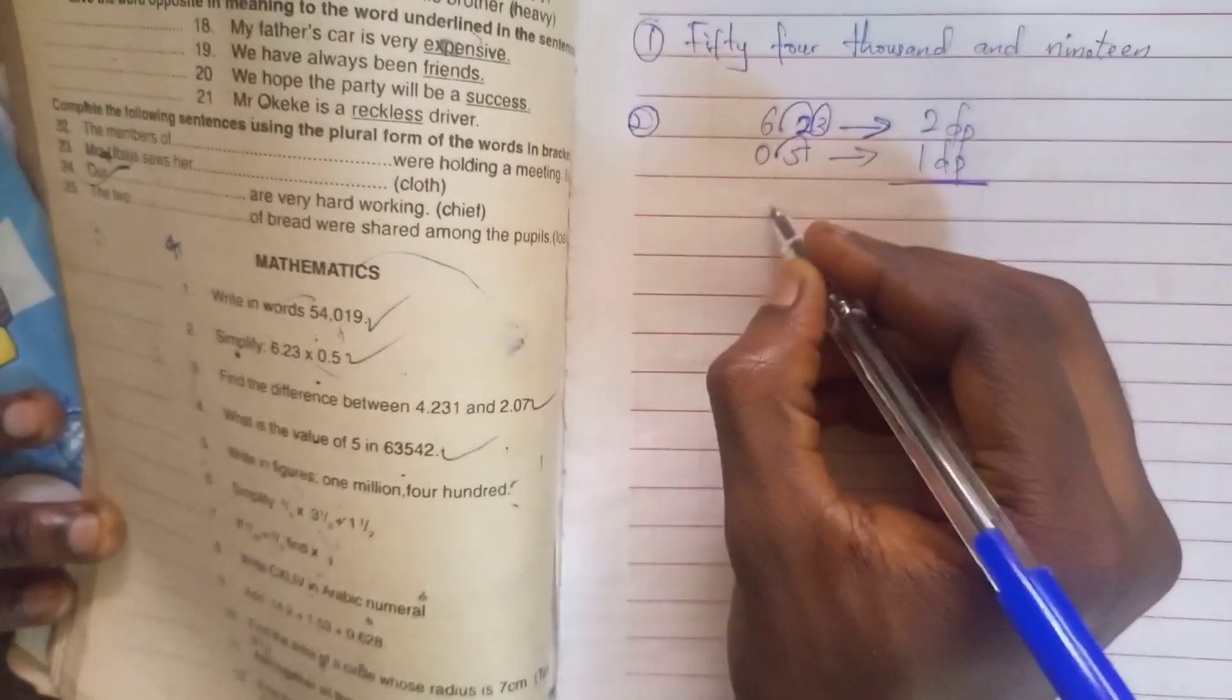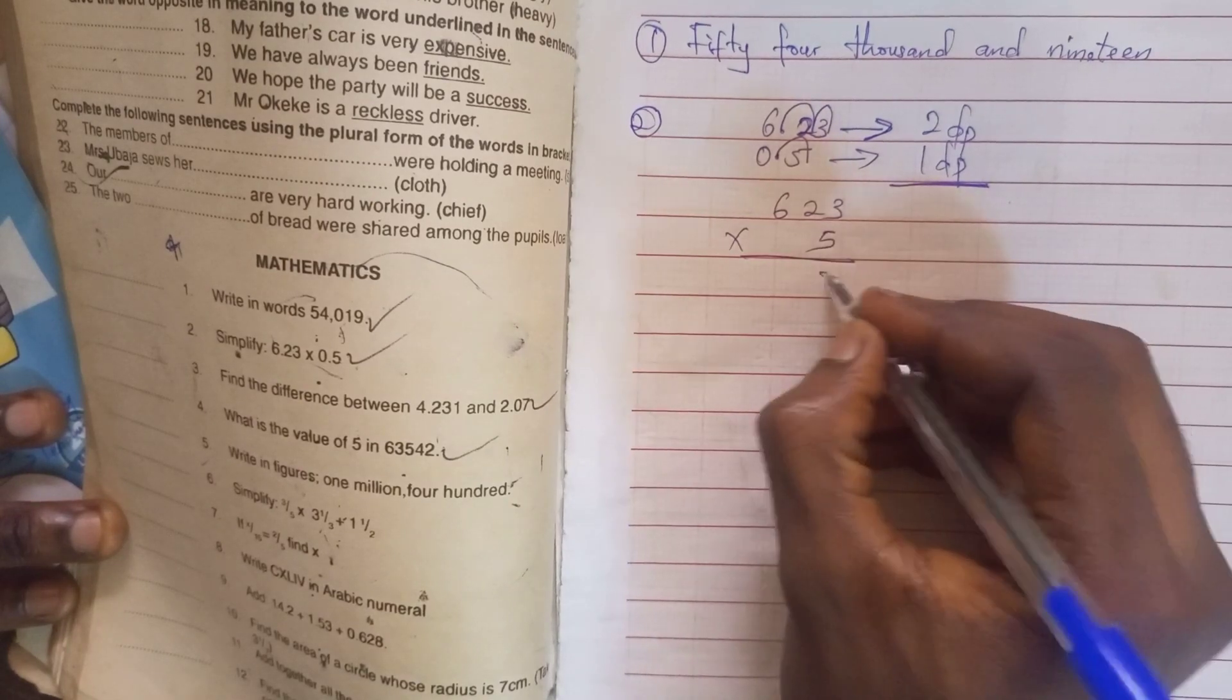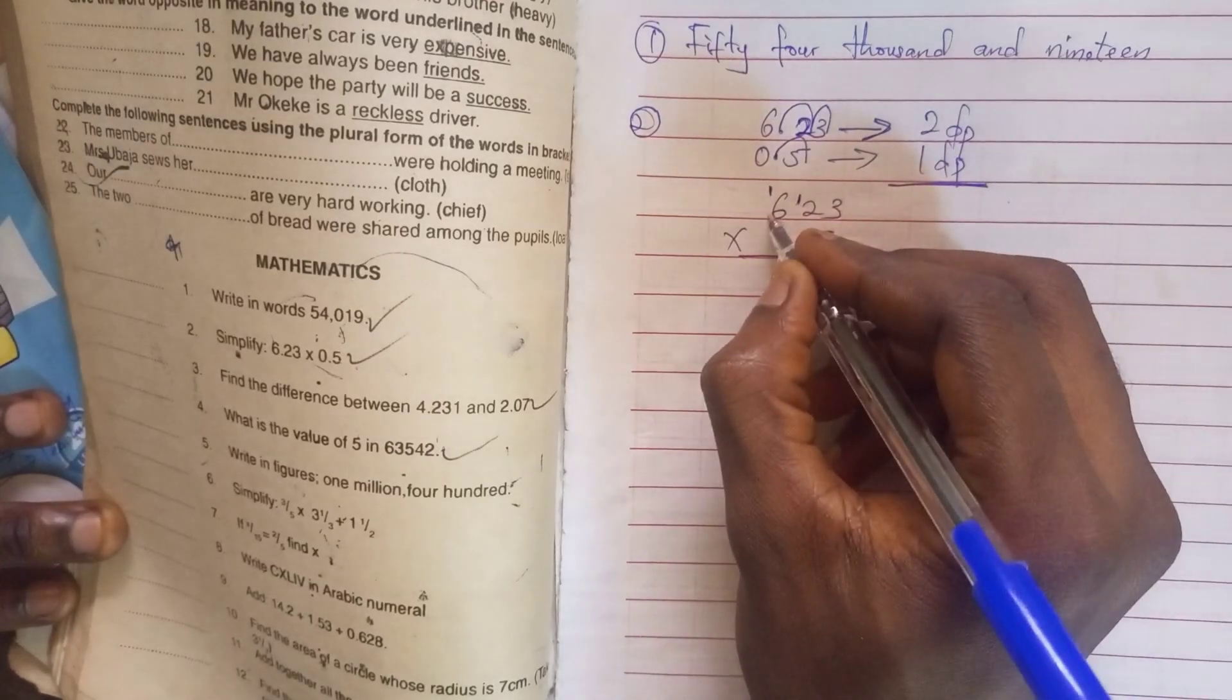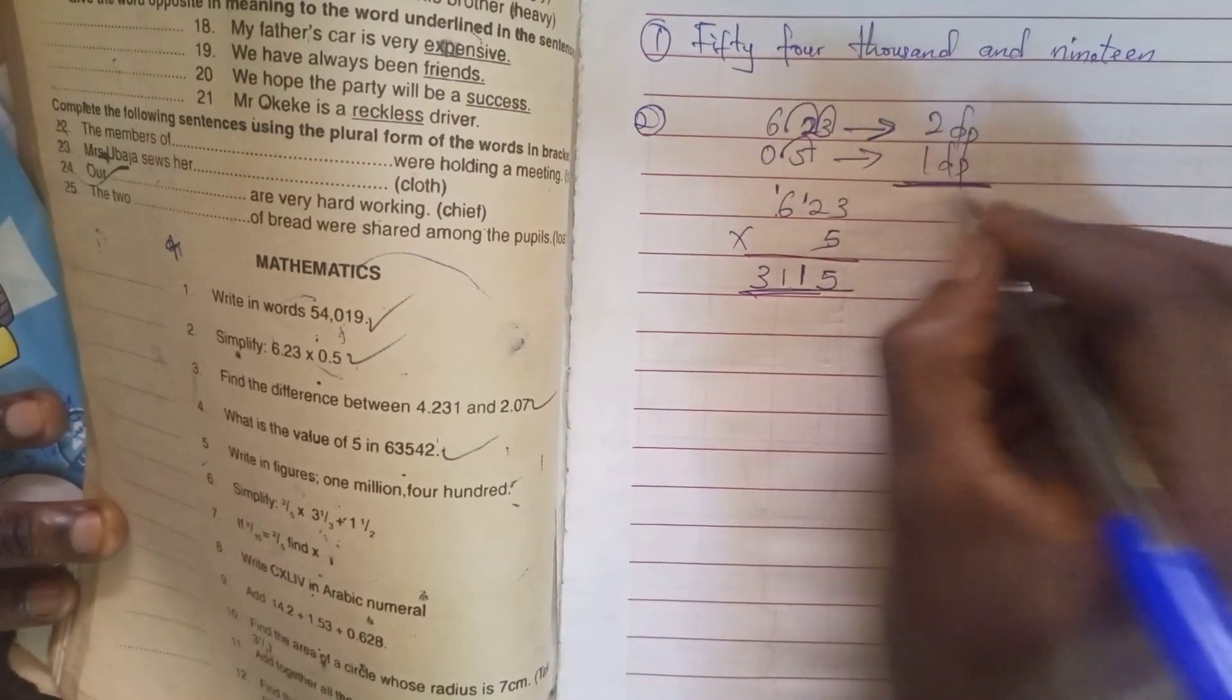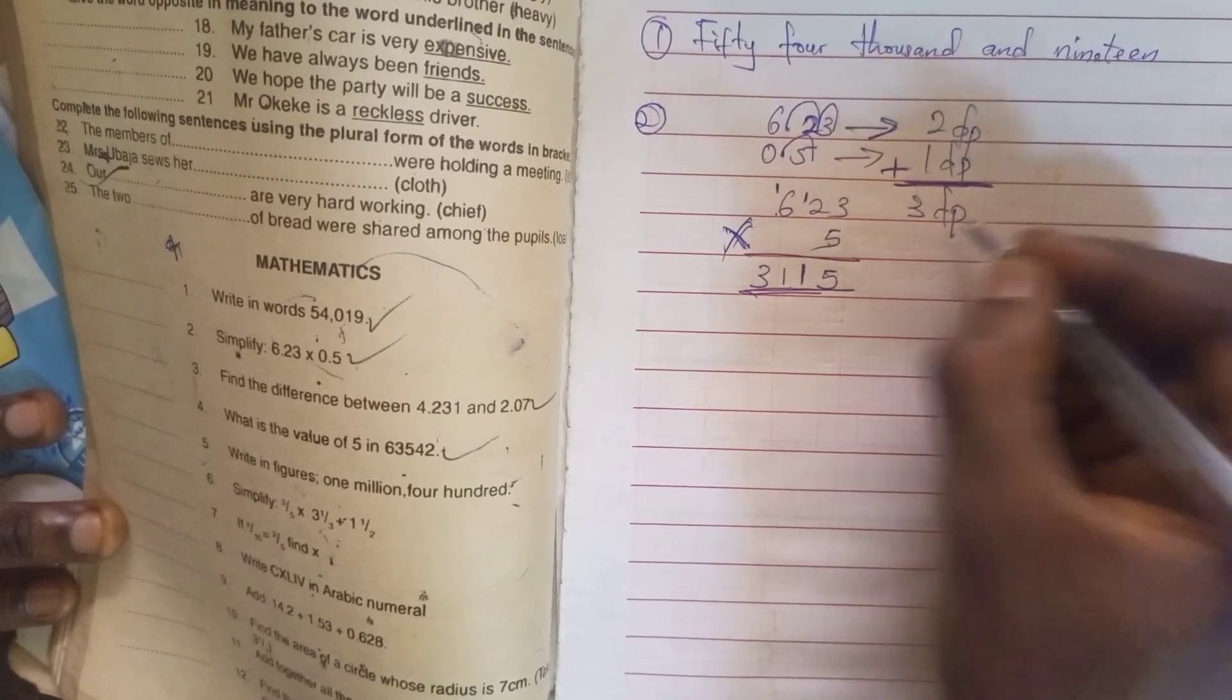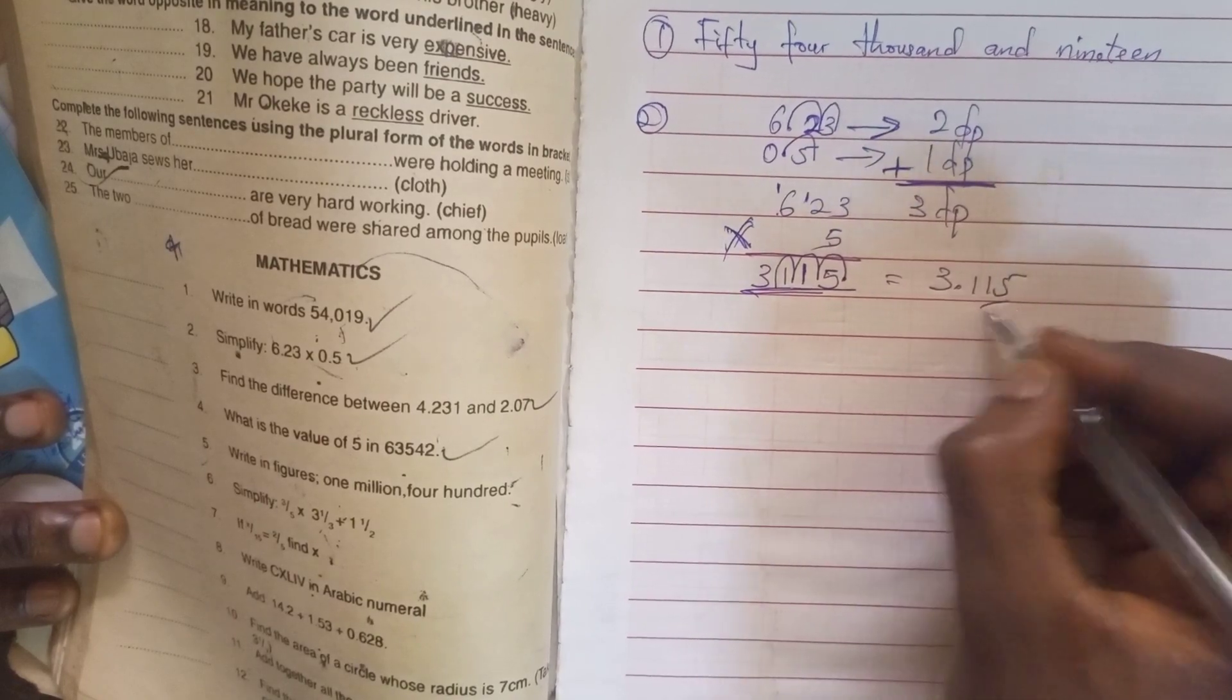Now we write 6.23 times 5. So we've got to times it. We write 3 times 5 is 15, write your 5, write 1 here. 5 times 2 is 10, add it with 1 to give you 11. Write your 1 here. 5 times 6 is 30 plus 1 is 31. So you remember your decimal places that you kept here. Because it is times we have to add the decimal places, which is three decimal points. So we move it to three places: 1, 2, 3, which is 3.115. So this is the answer.